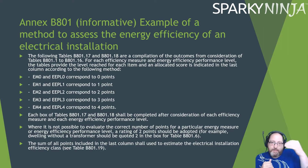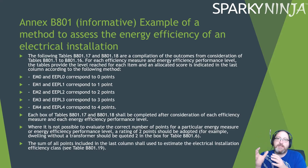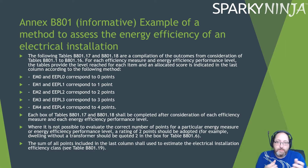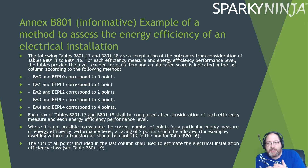The following tables are a compilation of outcomes from all the tables we've looked at. For each efficiency measure and energy efficiency performance level, the tables provide the level reached and an allocated score in the last column. Level zero scores zero points; level one scores one point; level three scores three points. Where it's not possible to evaluate the correct number of points — for example, a dwelling without a transformer — a rating of two points should be adopted.